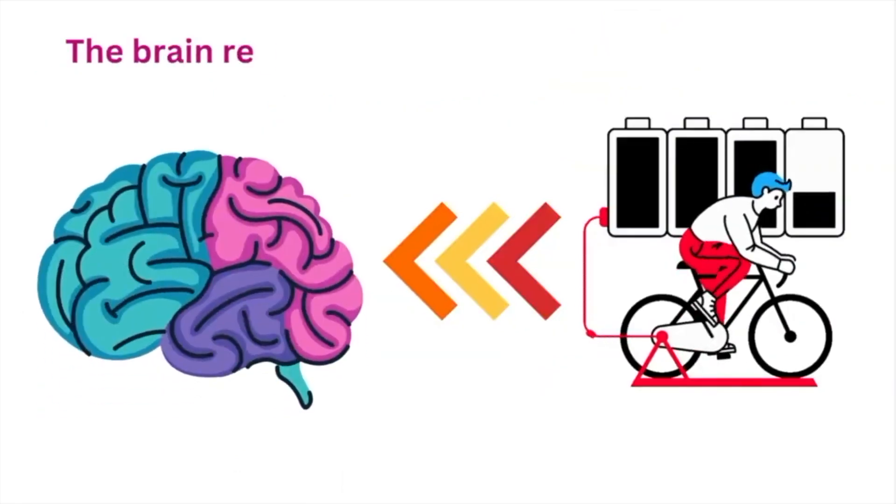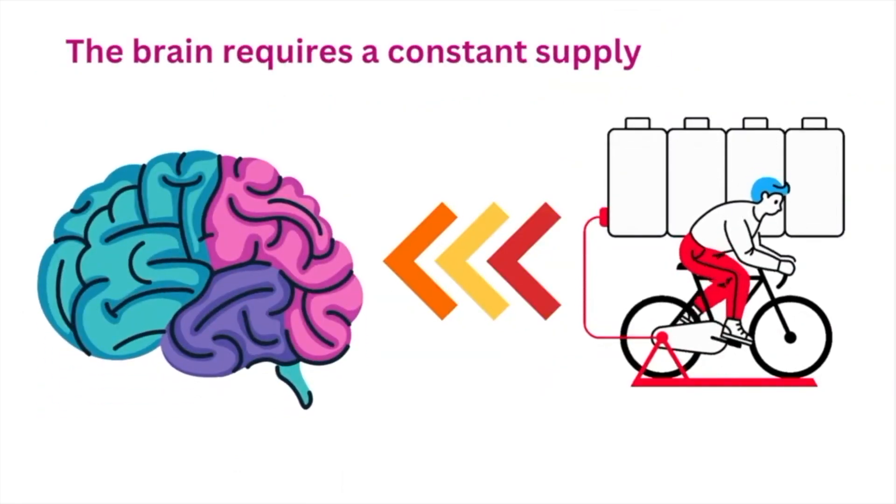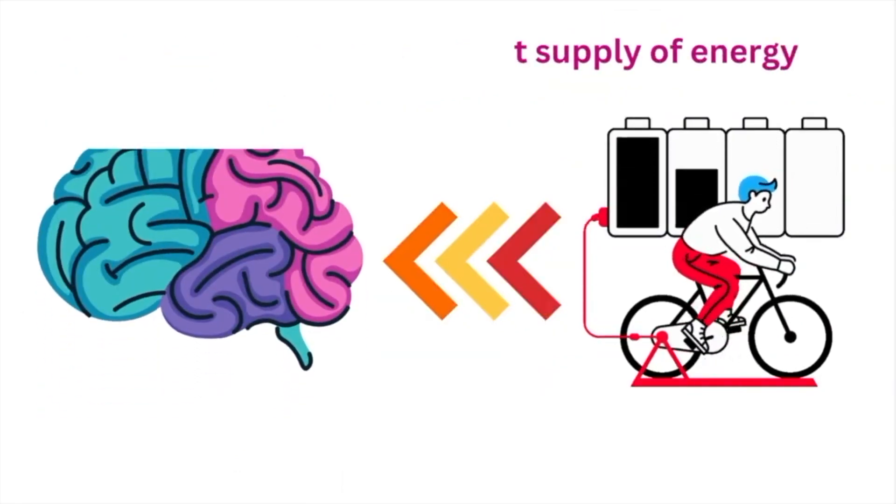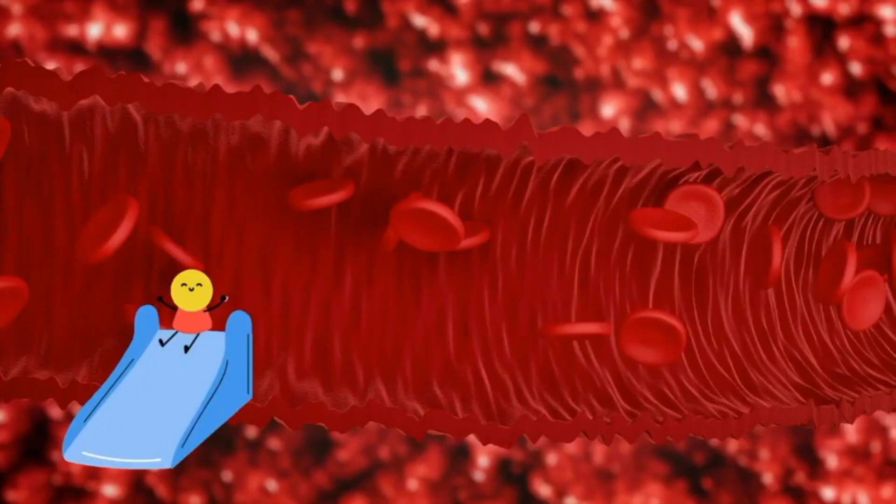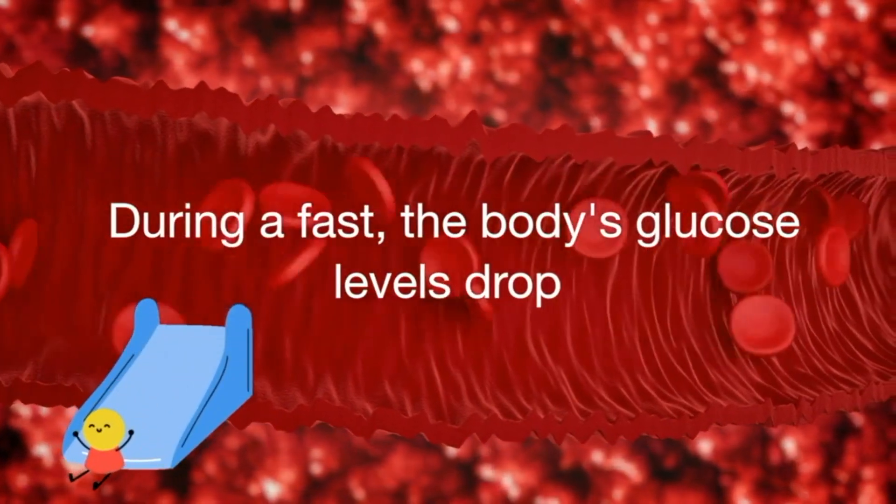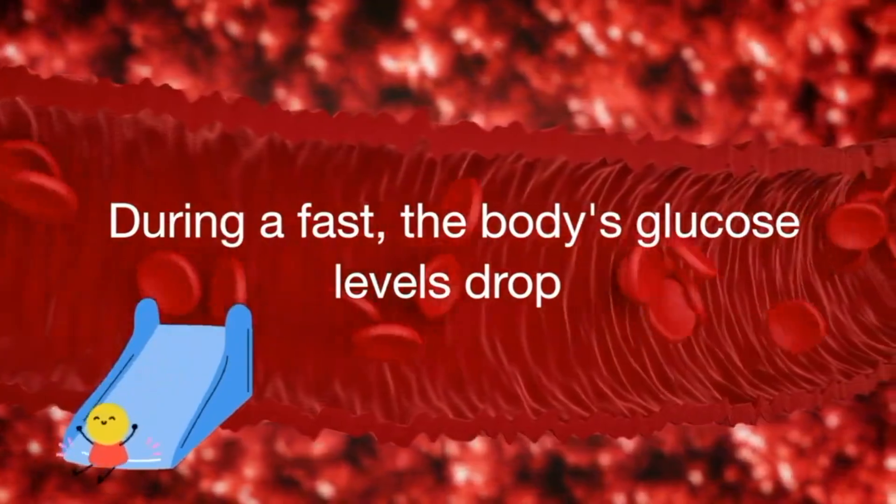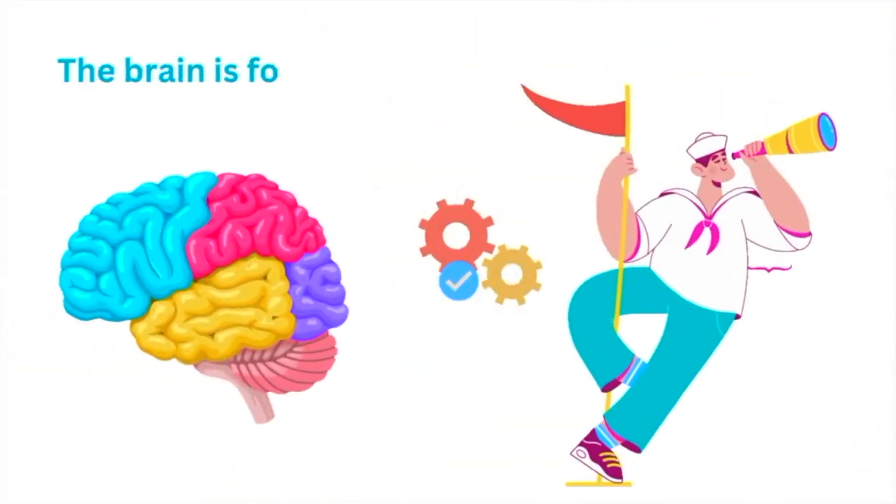The brain is a complex organ that requires a constant supply of energy to function properly. This energy is derived primarily from glucose, which is transported to the brain via the bloodstream. During a fast, the body's glucose levels drop, and the brain is forced to find alternative sources of energy.